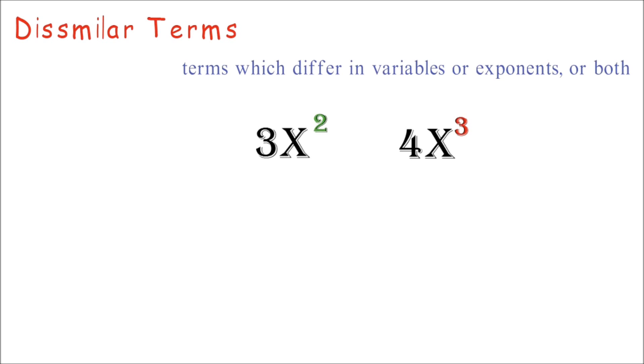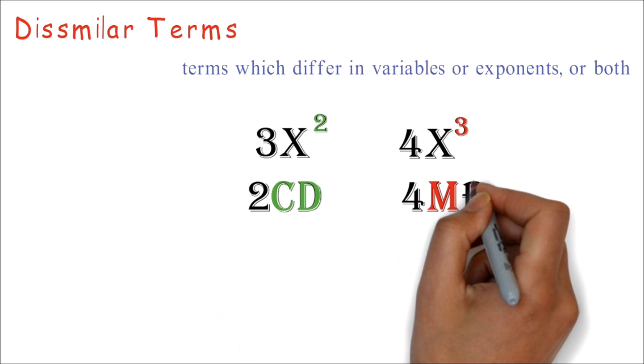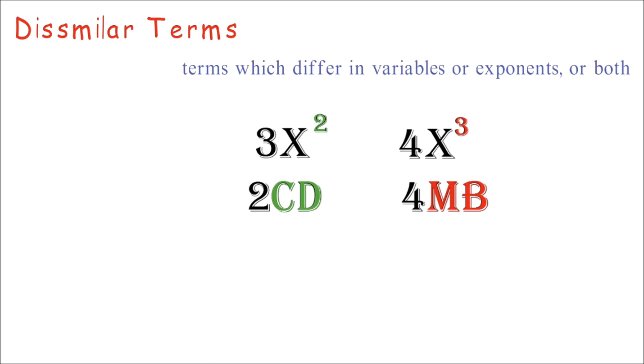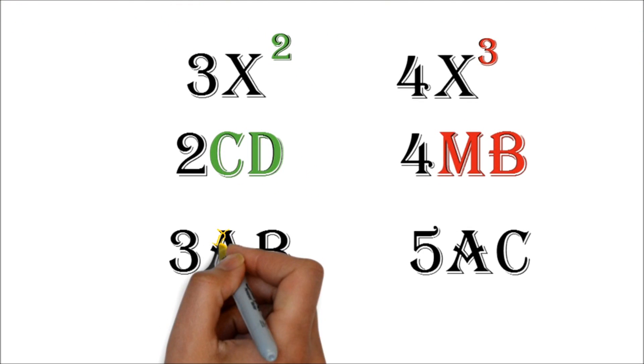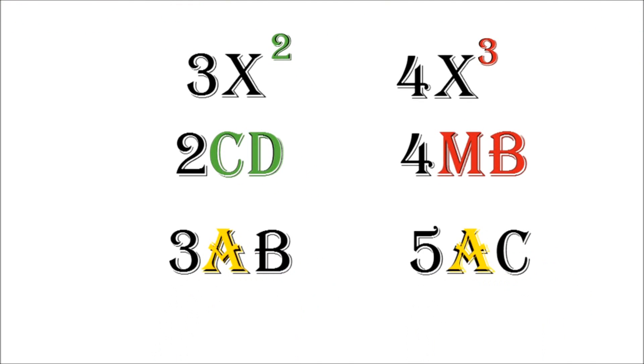Another example, 2cd and 4mb. Notice they have different letters. One is cd and the other mb, so they are dissimilar terms. One more example, 3ab and 5ac. Now here we see that they both have the variable a, but one is ab and the other is ac. They are still dissimilar terms. All the letters must be exactly the same.